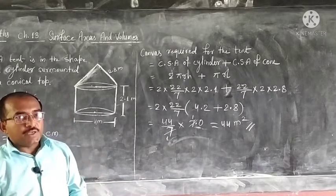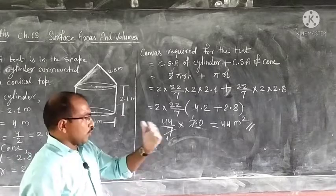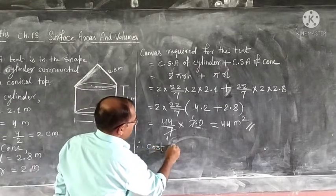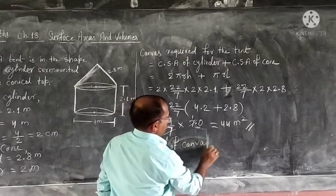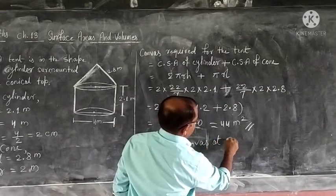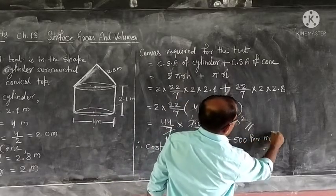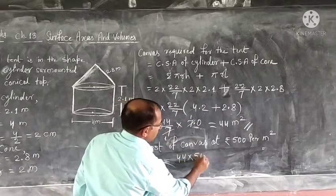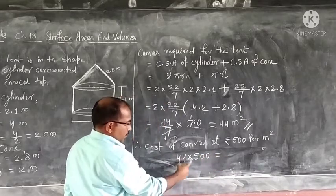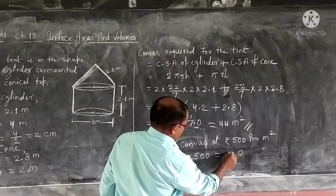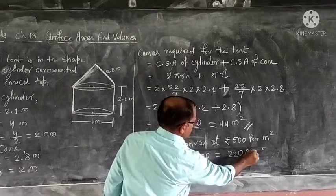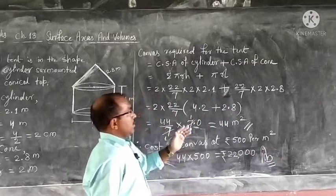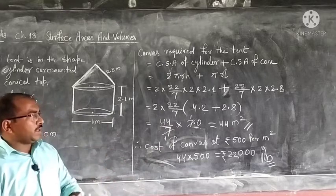Now we have found how much canvas we need — 44 m². We go to the market to buy it. The cost is rupees 500 per square meter. Therefore, cost of canvas = 44 × 500 = 22,000 rupees. So we need 22,000 rupees for buying the canvas required for the tent.